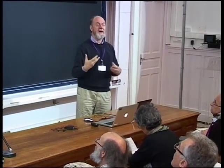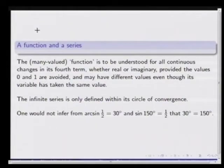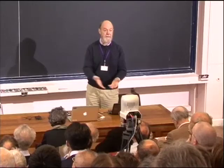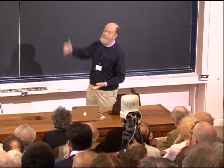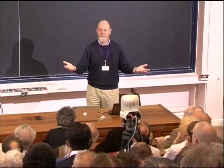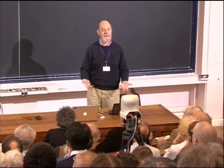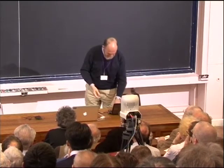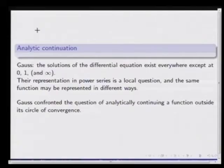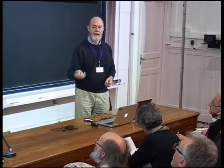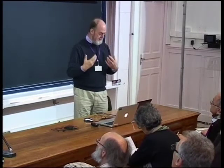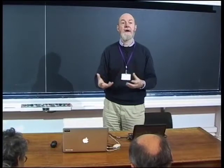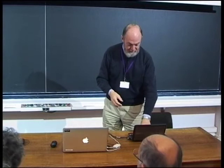The many-valued function is defined everywhere except at 0, 1, and infinity. The infinite series is valid only on a certain circular domain; its variable is complex. He explains that this impossible equation is akin to this mistake: with many-valued functions, you would not infer from the behavior of the arc sine function that 30 degrees was equal to 150 degrees. So he is studying analytic continuation of complex-valued functions of a complex variable defined on a certain domain, comparing this with representation by power series. The analytic continuation of a complex function outside of its domain of convergence leads us to Gauss and to monodromy.